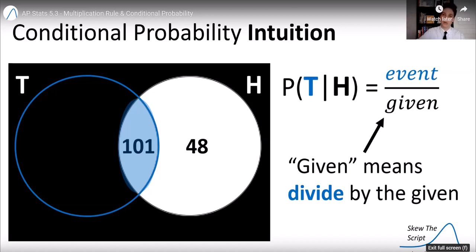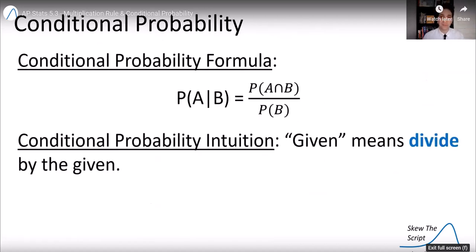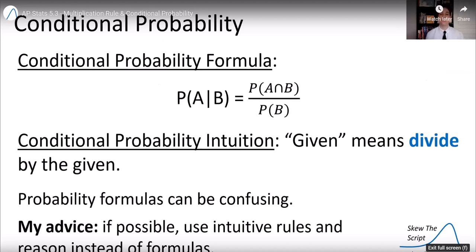So the general rule, the intuitive rule, remember, is given means divide by the given. In this case, we're dividing by the high income earners. And here's the formula, and here's the intuition. So again, please use the intuition. The formulas can get confusing. Given means take both, divide by the given, divide by the given.